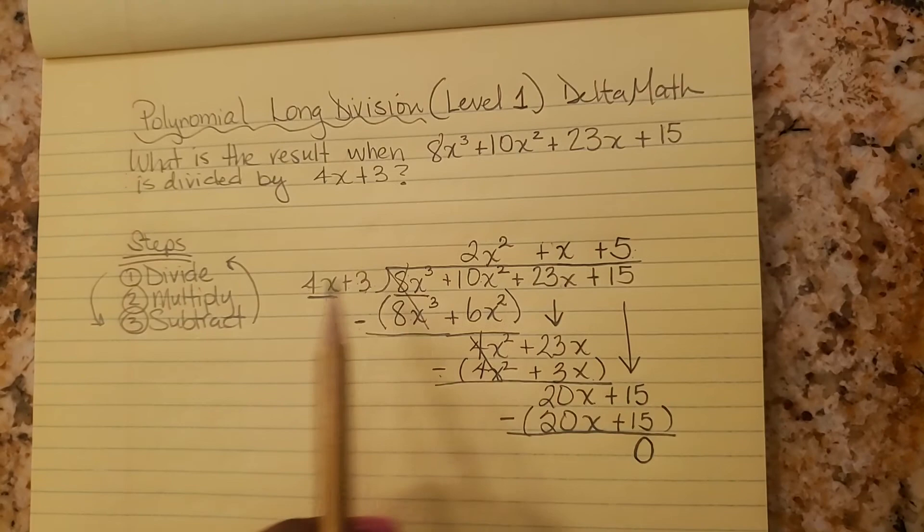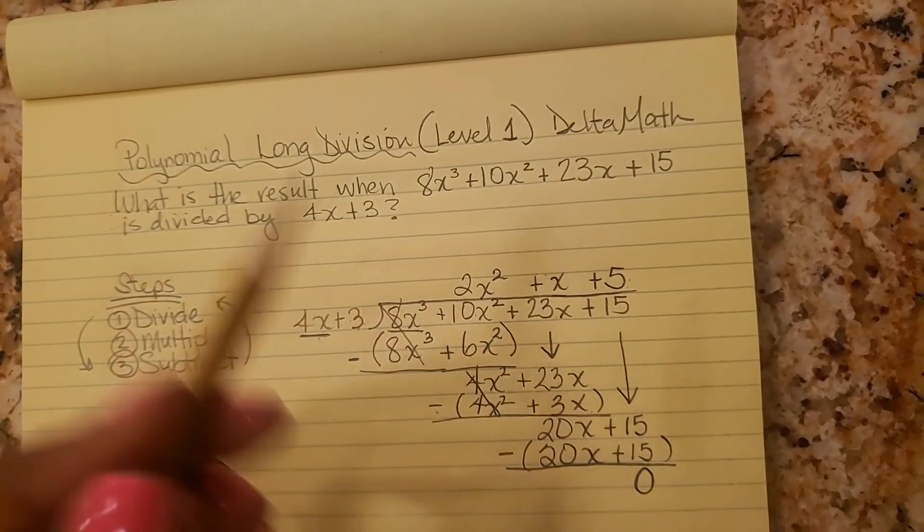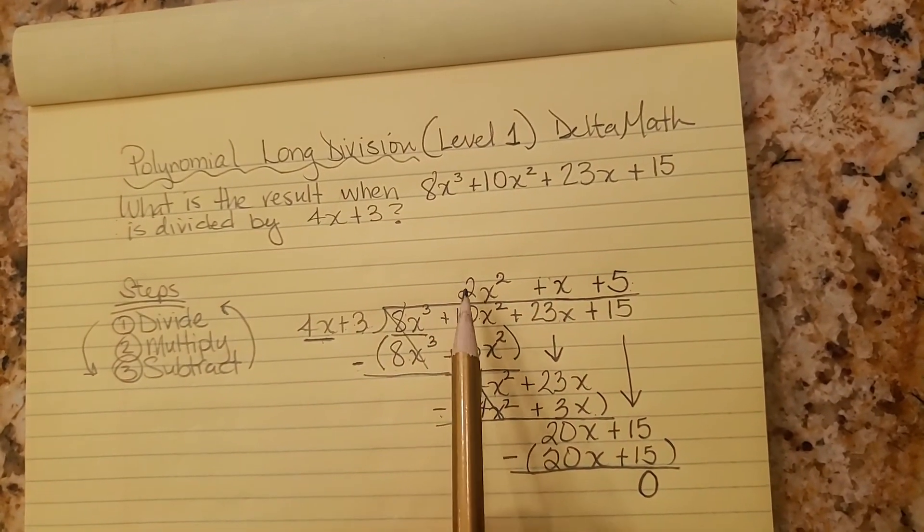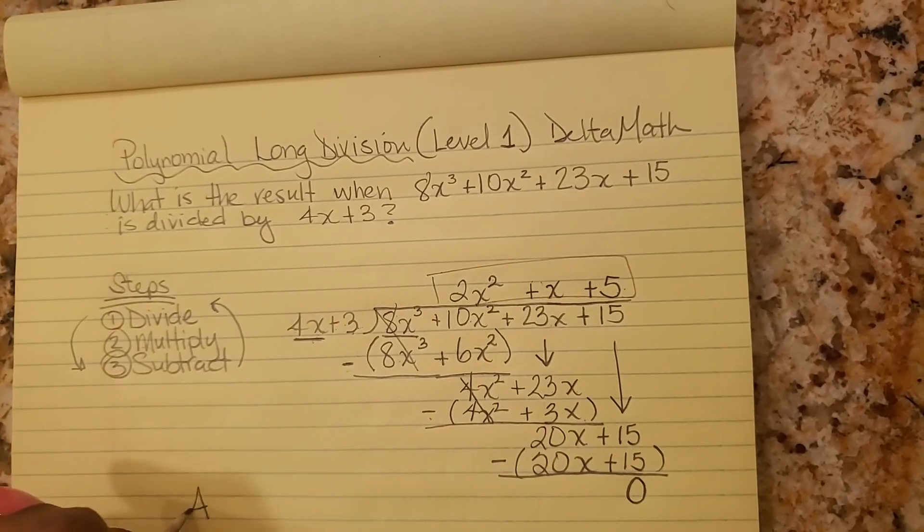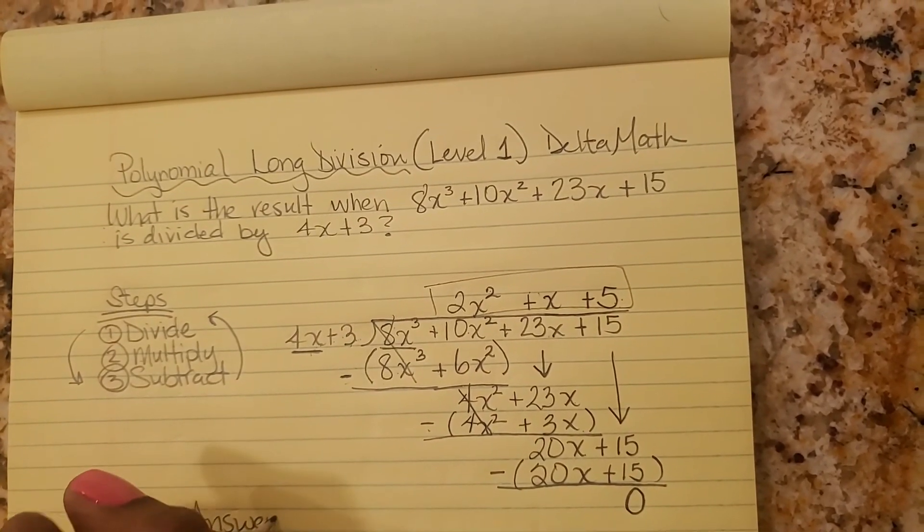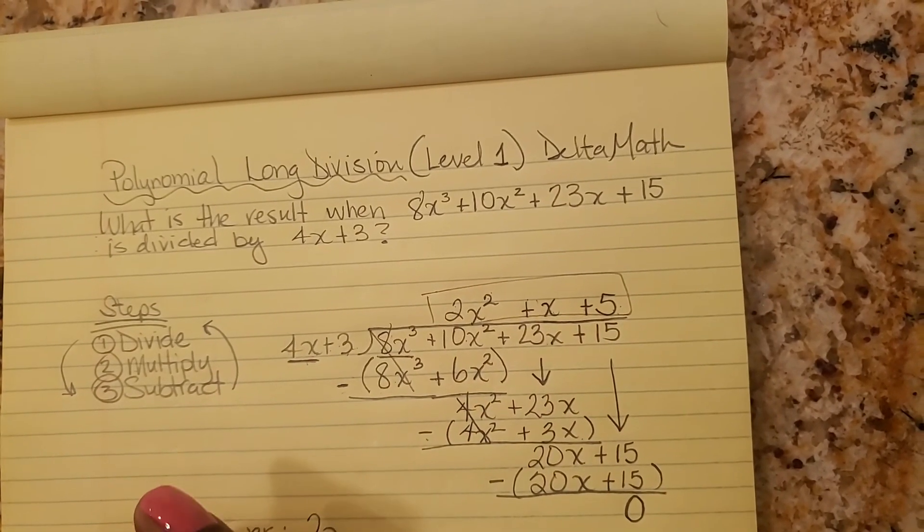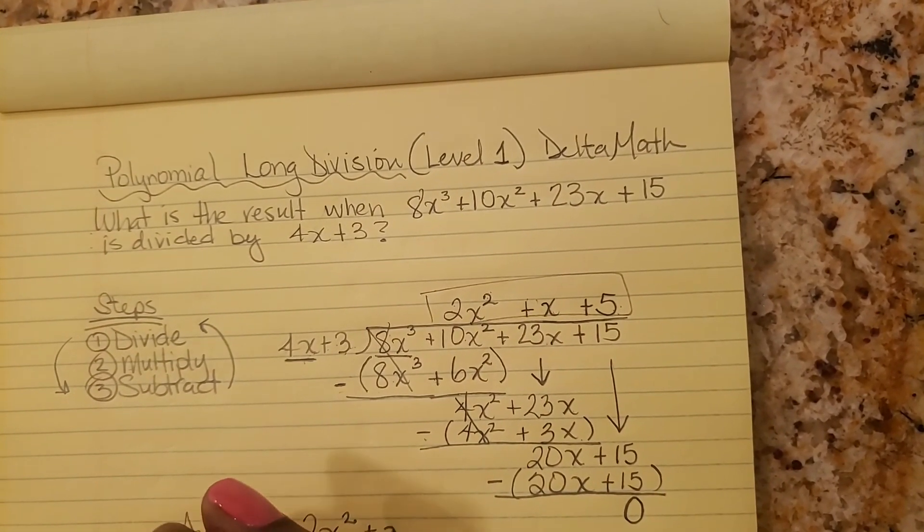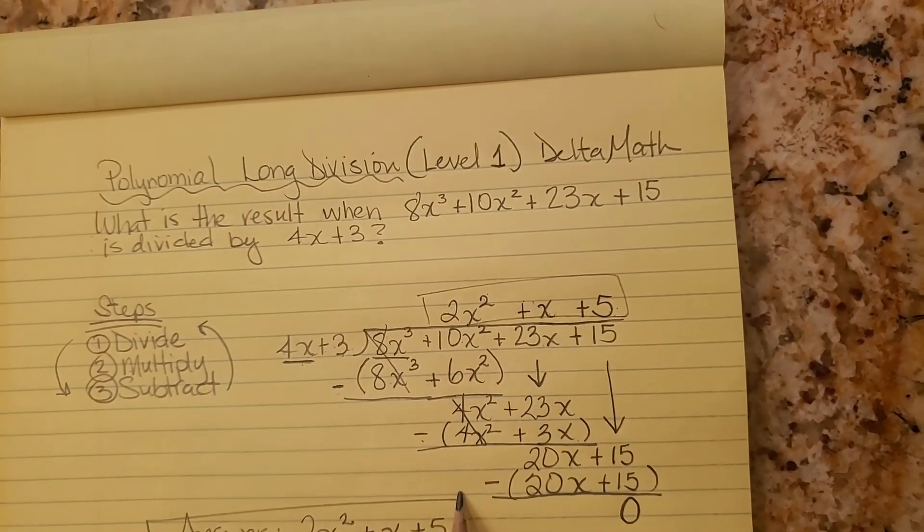That means that 4x plus 3 is a factor of this whole thing. But that's another story. So here's our final answer. The answer is 2x squared plus x plus 5. Done and done.